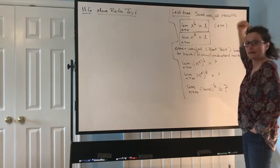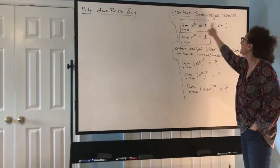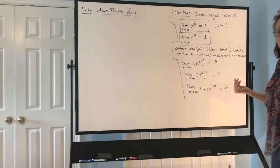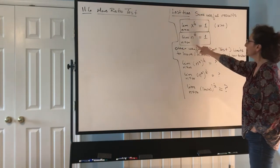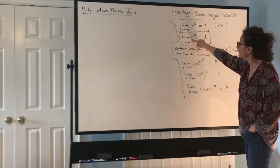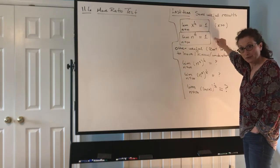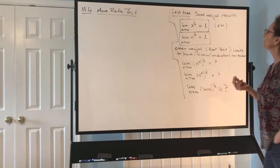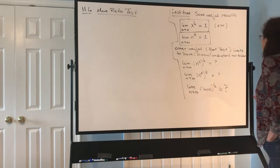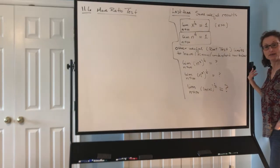The next result you might want to have in your back pocket: the limit as n goes to infinity of some fixed positive number c to the 1/n — that limit is 1. That one was relatively easy. When the base is not fixed but also growing unbounded, we showed the limit as n goes to infinity of n to the 1/n is also 1. We used very different methods for that one. Those two are very nice, important results to have and understand whenever you're using the root test, taking nth roots and then taking limits as n goes to infinity.